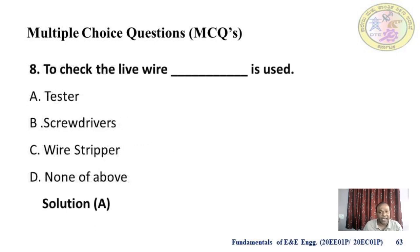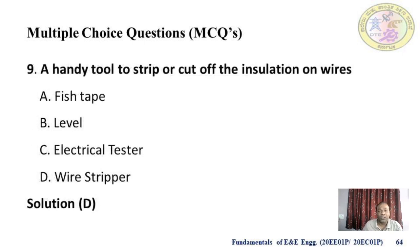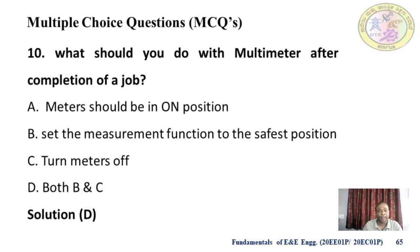Eighth: to check a live wire, which tool is used — tester, screw wire, wire stripper, or none? Obviously a tester is used, so A is correct. Ninth: handy tool to strip or cut insulation on wires — fisted, level, electrical tester, or wire stripper? Answer is D — wire stripper. Tenth: what should you do with a multimeter after completing a job? Set the measurement function to the safest position, turn the meter off — both B and C are the correct answers. You should not leave the meter on.